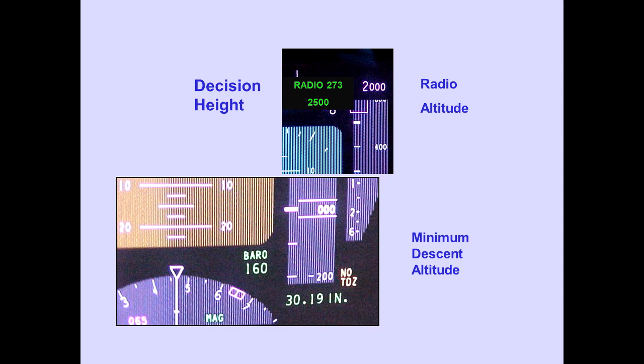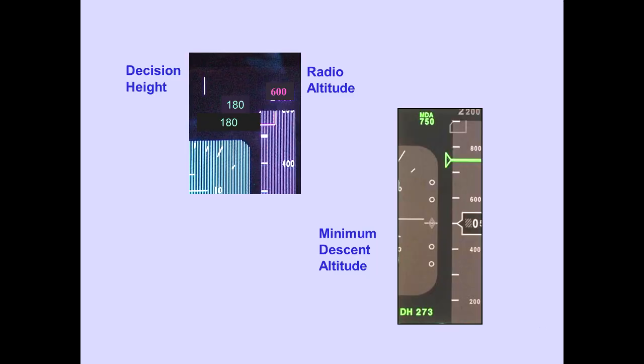Minimum descent altitude, radio altitude, and decision height are also displayed. ATLAS configures this presentation with minimum descent altitude barometrically displayed in the lower right corner of the PFD, with decision height and radio altitude displayed in the upper right corner of the PFD.